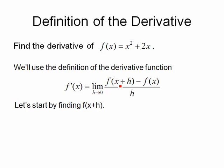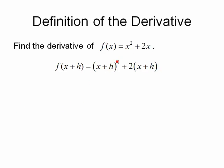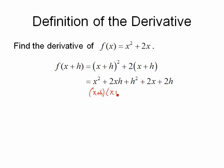Let's start by finding f of x plus h. That means we change all the x's in our function to x plus h. The x squared becomes x plus h quantity squared, and 2 times x becomes 2 times the quantity x plus h. We'll FOIL out x plus h times x plus h, which gives us x squared plus 2xh plus h squared. x times x gives x squared, the inside and outside terms both give h times x, so together that's 2xh, and last times last is h squared. Distributing the 2 gives us 2x plus 2h.